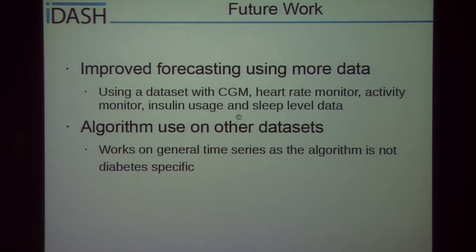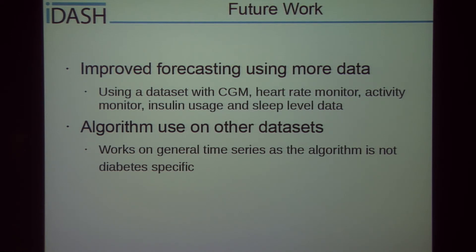In future work, we plan to improve forecasting using more data. As previously stated in Stephanie's talk, we have a dataset with CGM data, heart rate monitor, activity monitor, insulin usage, and sleep level data, and we hope to gather all this information together to create a more informed predictive scheme. Additionally, this algorithm can be used on other datasets, as it works on general data since the algorithm is not specific to diabetes.